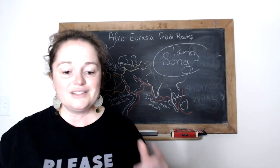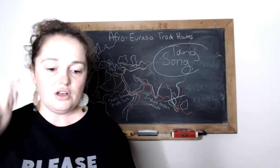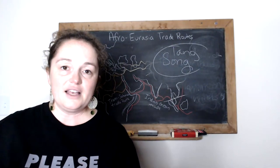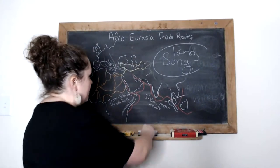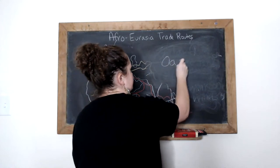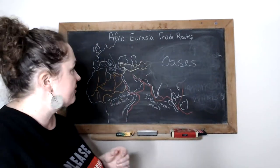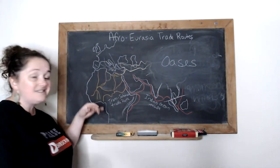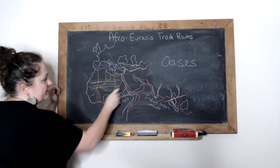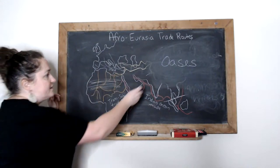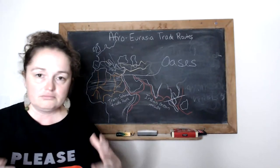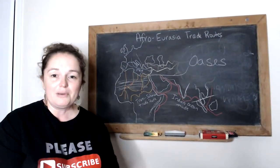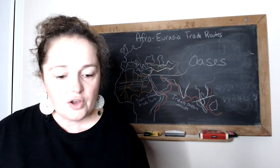Now let's do the Trans-Saharan trade route. First word: oasis — places where humans can settle because of access to underground water. The Trans-Saharan goes through the Sahara Desert, and there are oases throughout the network so travelers can refuel their camels. The Trans-Saharan trade route connects northern Africa with western Eurasia.